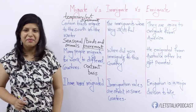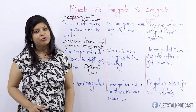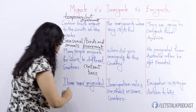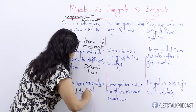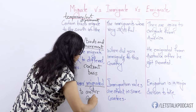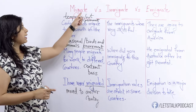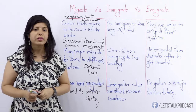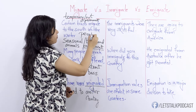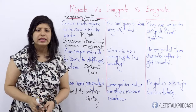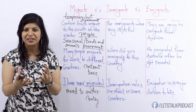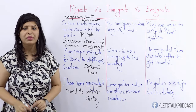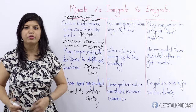I have never migrated — that stands true for me. I have never moved to another country even for a short period. So migrate is temporary, not permanent. It can be seasonal and it involves the movement of birds, animals, and it could also involve people. Another thing to remember: migrate is a verb, it's an action word. The noun form is migration — migration is the noun form of migrate.